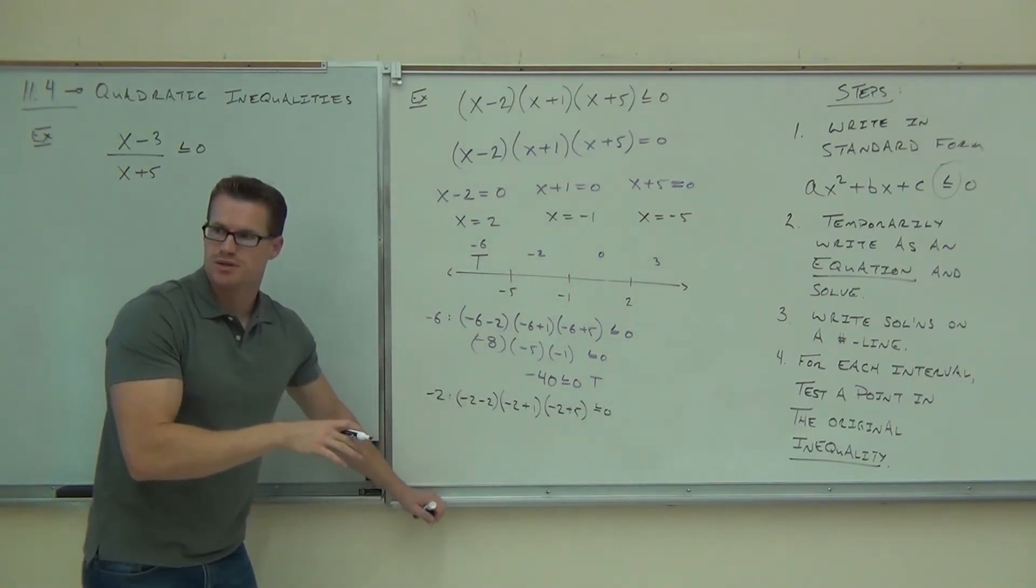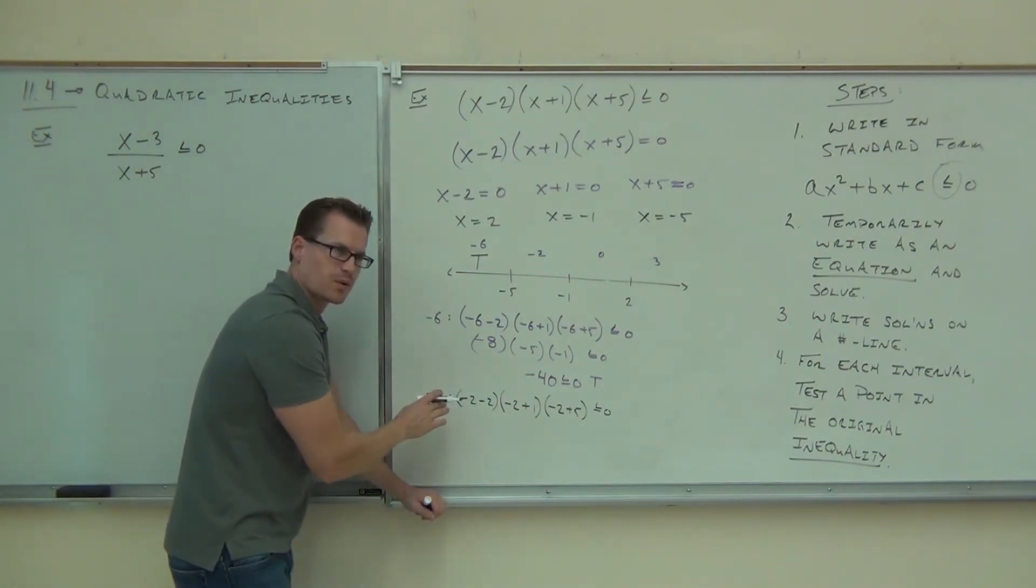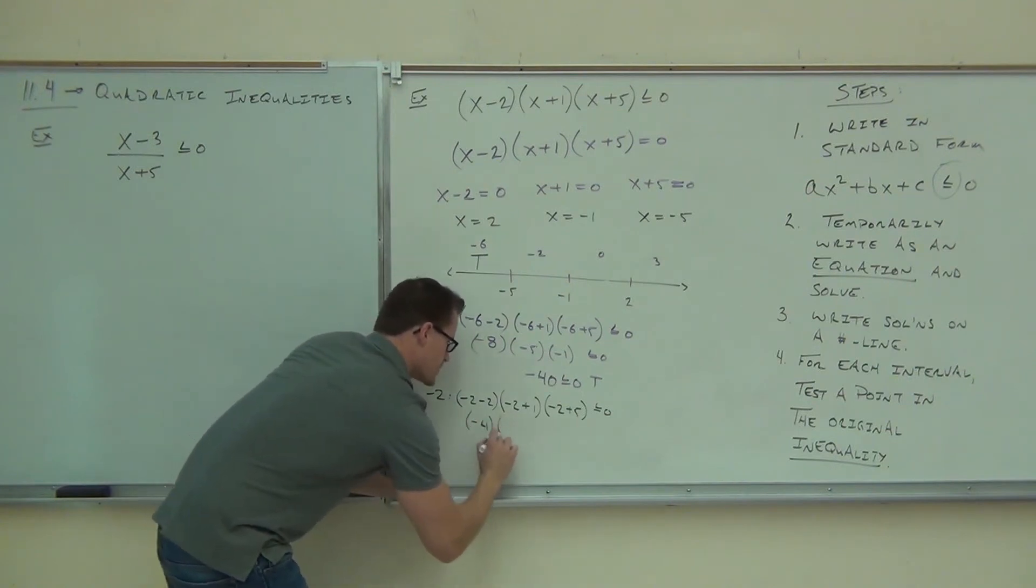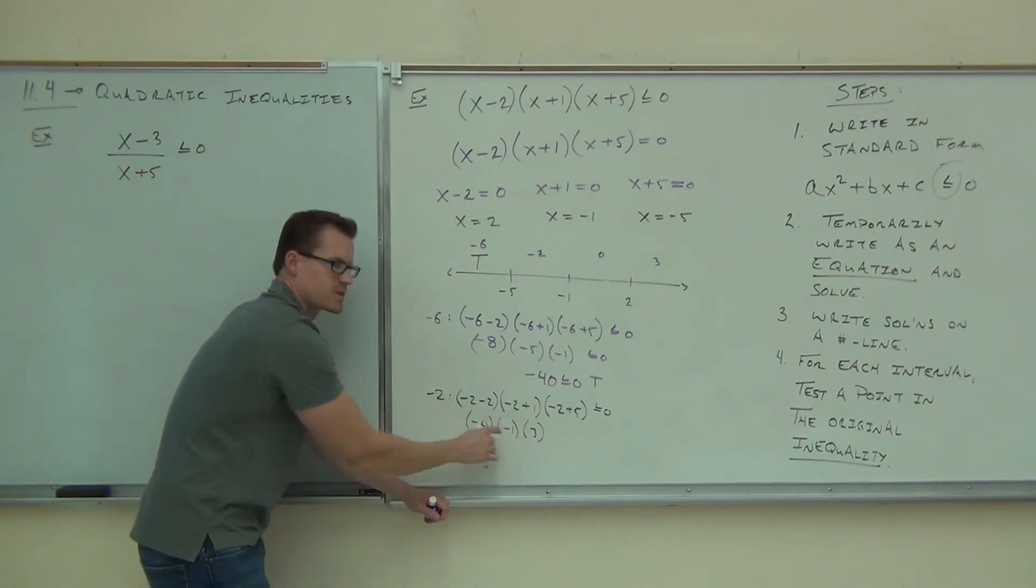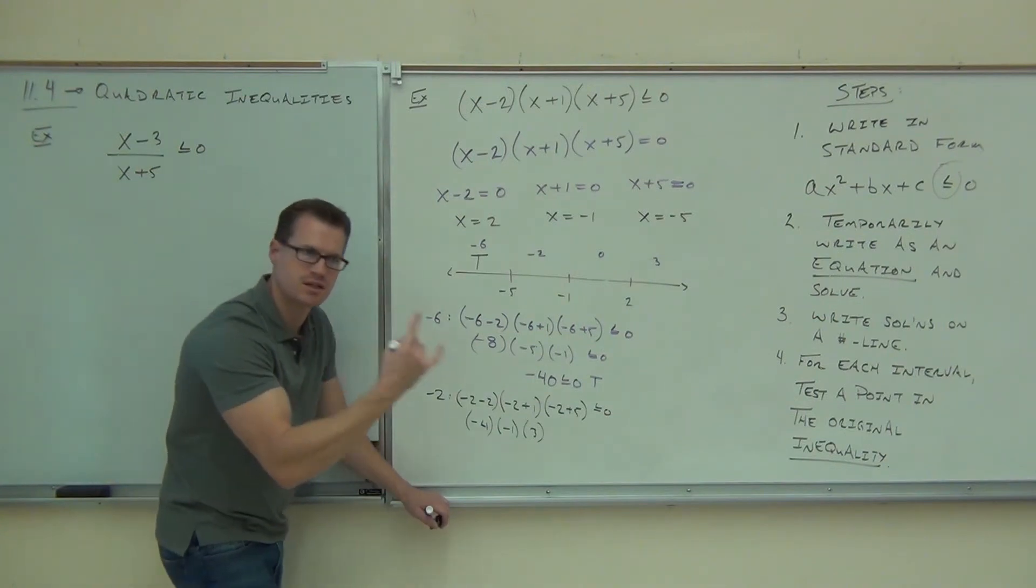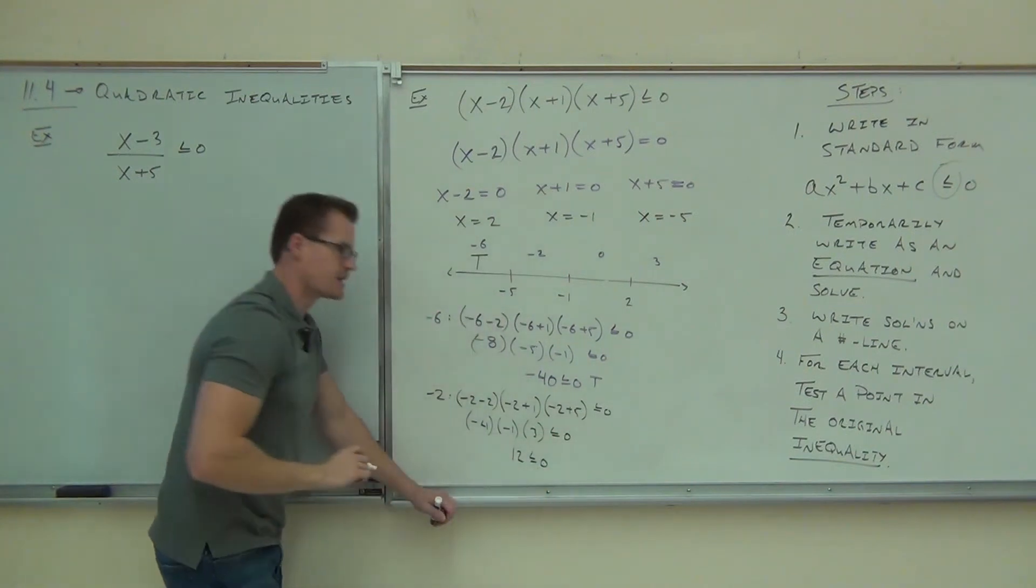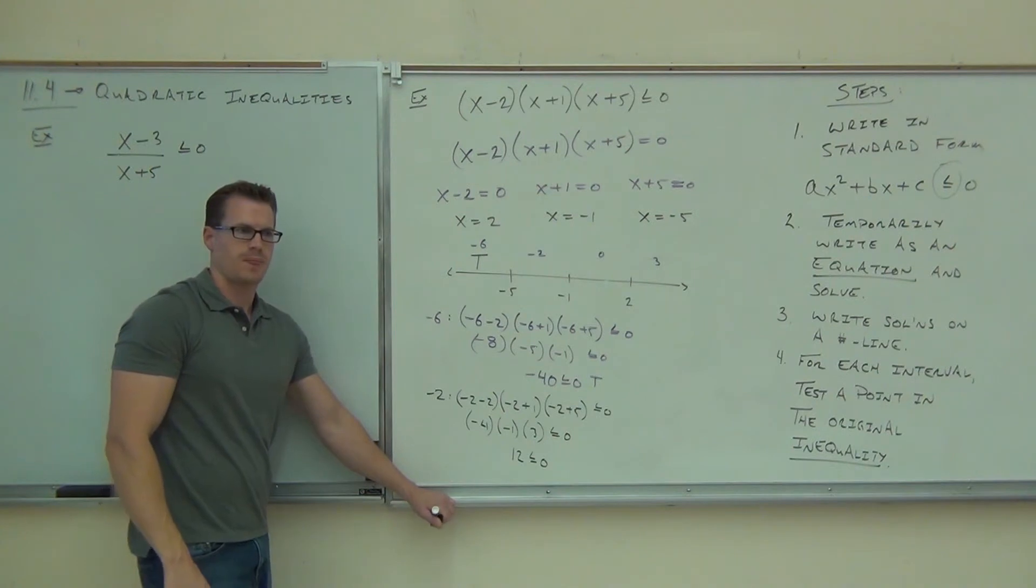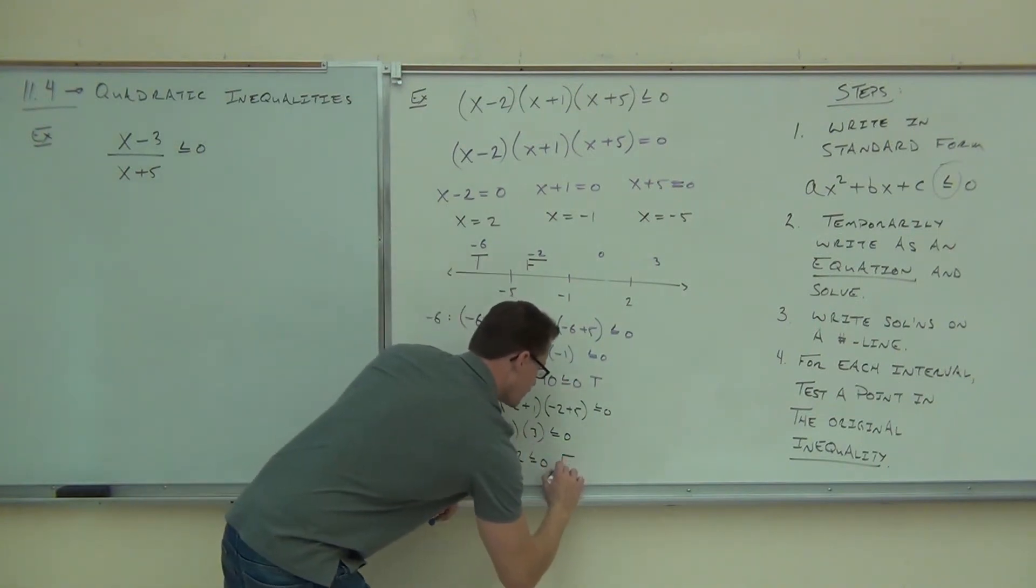Okay, now come back up here. Let's see what happens with these remaining points. Hopefully you were able to check these. If we plug in negative 2, hopefully you have this on your paper. You got negative 4 times negative 1 times 3. Did you all make it that far? 12. Is 12 less than 0? No, definitely not. We just checked negative 2. It was definitely a false statement.